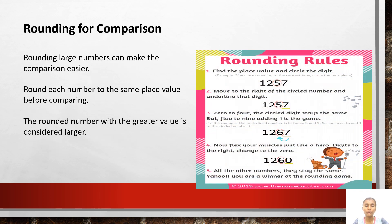Rounding for comparison: rounding large numbers can make the comparison easier. Round each number to the same place value before comparing. The rounded number with the greater value is considered larger. We can compare rounded numbers in the same way that we compare unrounded numbers, from left to right. Here is an example: compare 1,257, rounding to the nearest hundredth.